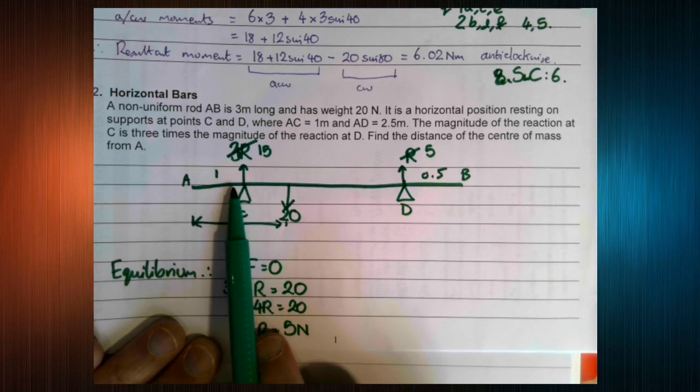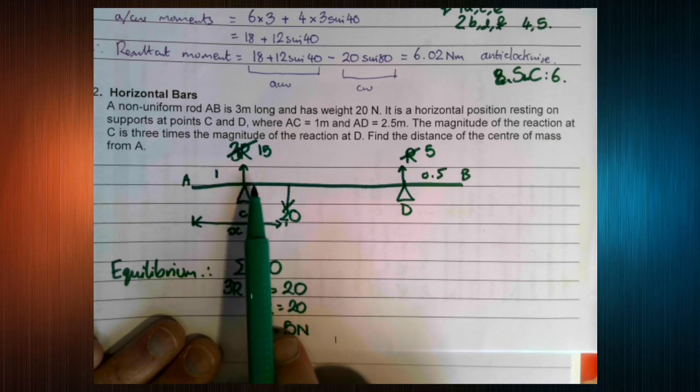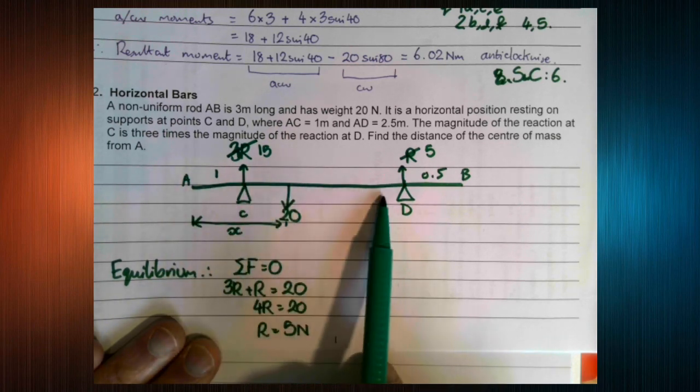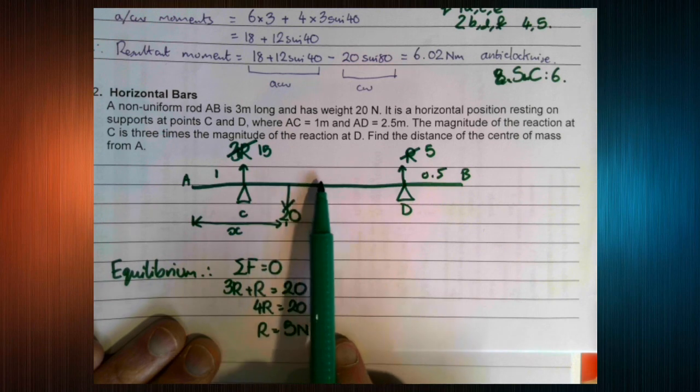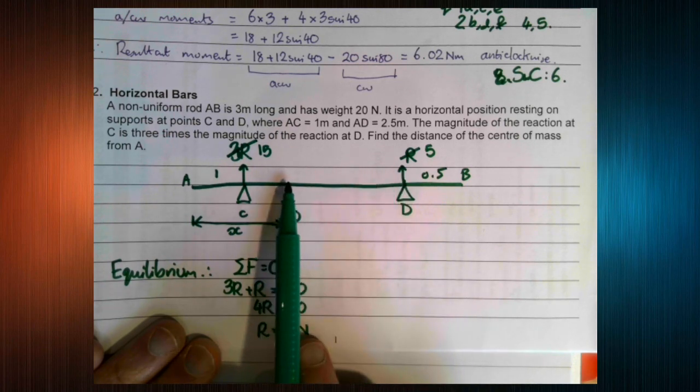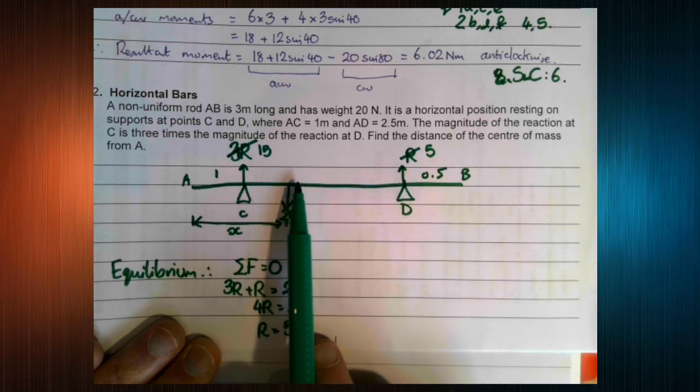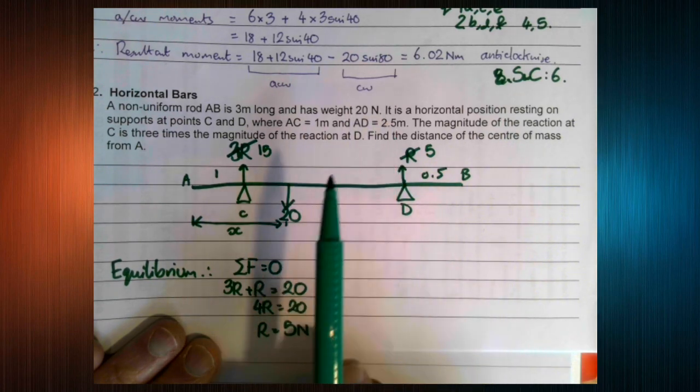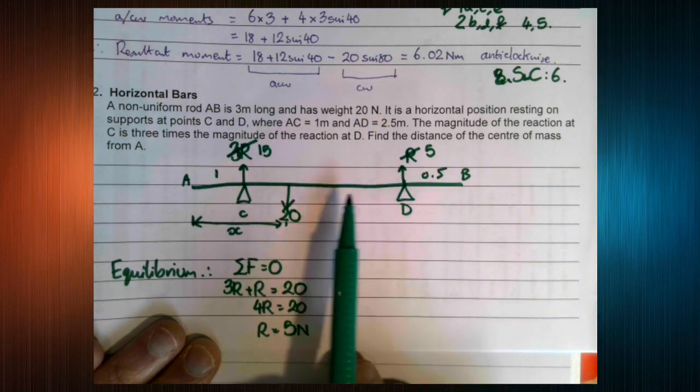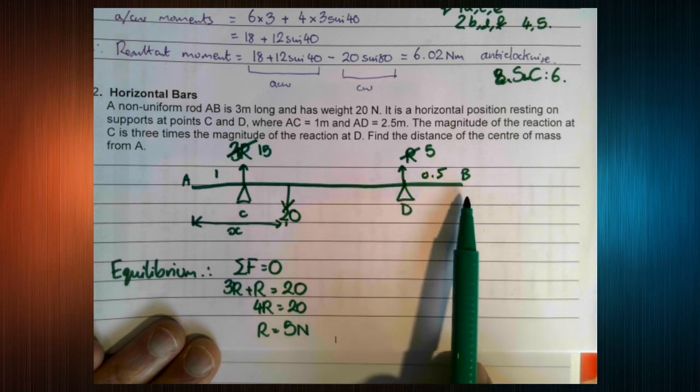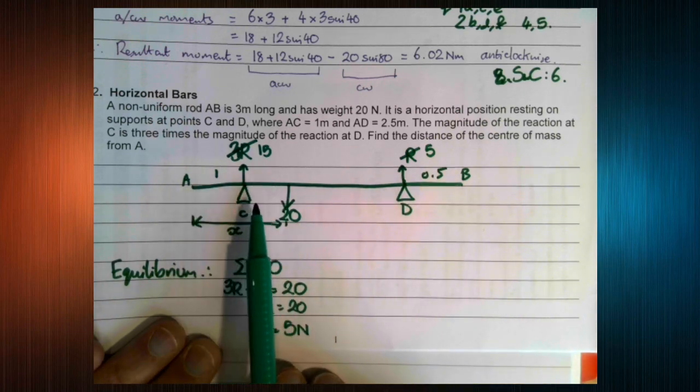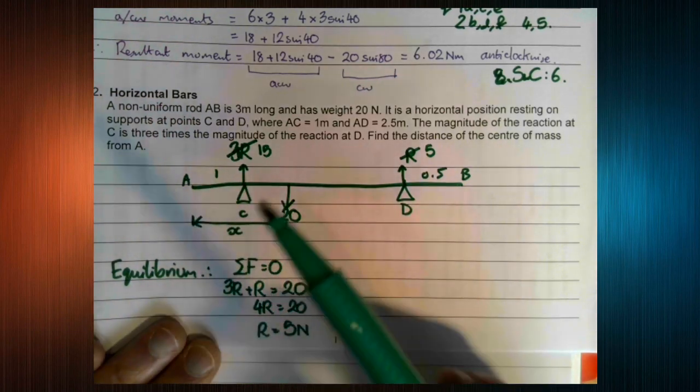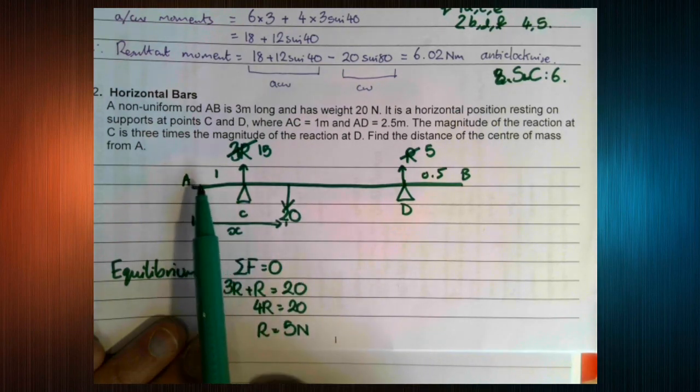We could take moments about C and work out this distance and then add 1 to it. We could take moments about D, work out this distance and take that away from 2.5. We could take moments about B, find this distance and take it away from 3. But that adds an extra step, we may as well take moments about A.